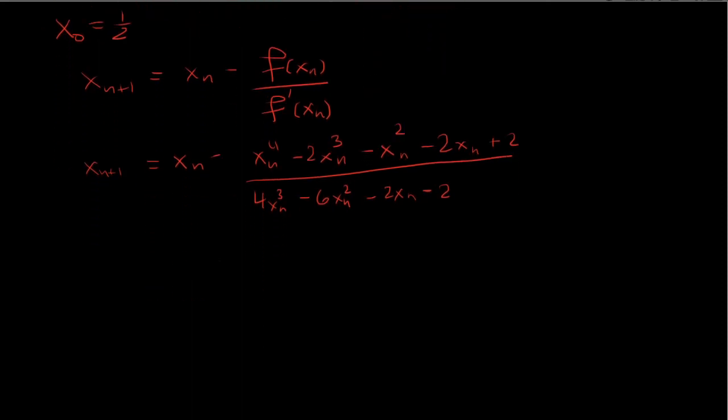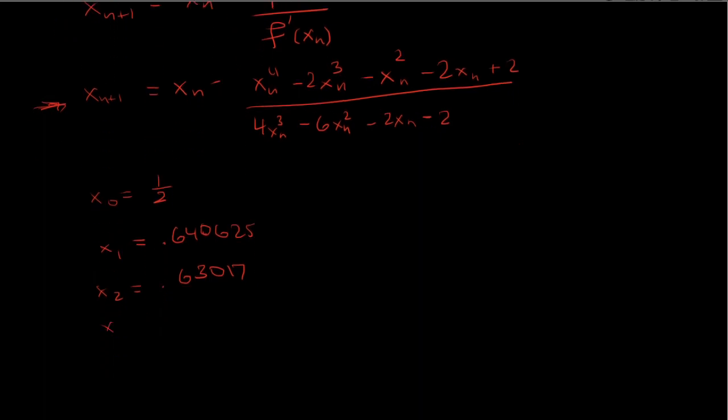Here we said x zero is a half so we'll be plugging in one half for all the x sub n's and to get x one that would just be 0.640625. And then for x two we will be plugging x sub one in for x sub n so again into this formula we get 0.63017. Let's say if we do this one more time x sub three we get 0.63012.